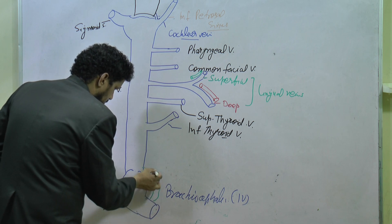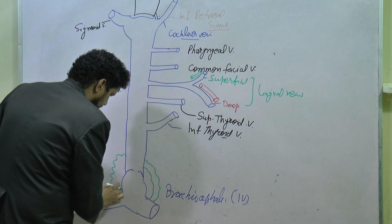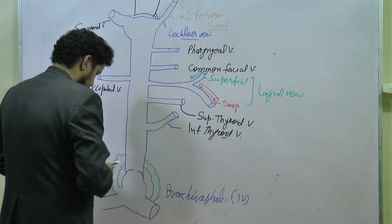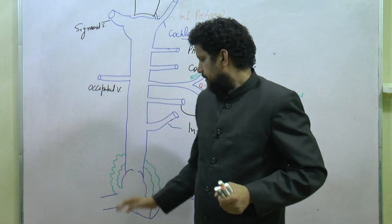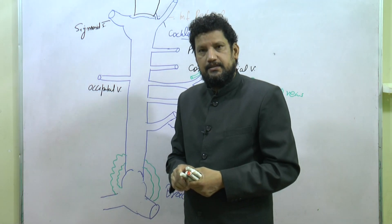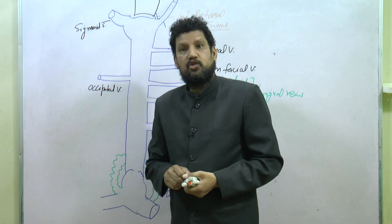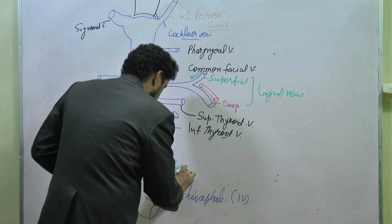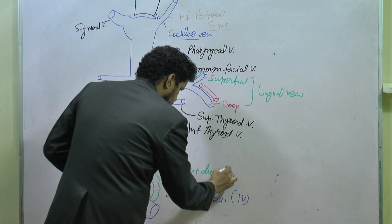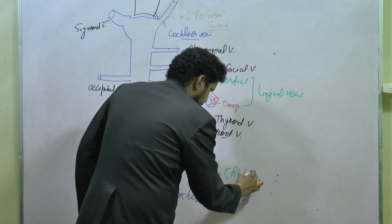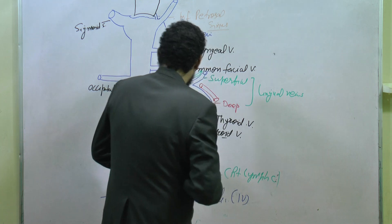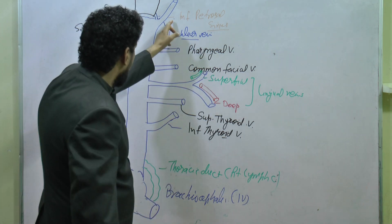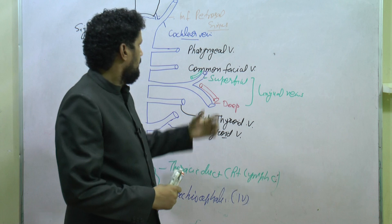The last tributary is a lymphatic channel. On the right side it is the right lymphatic duct, and on the left side it is the thoracic duct. So, very notably, the first tributary is a dural venous sinus and the last is a lymphatic channel.